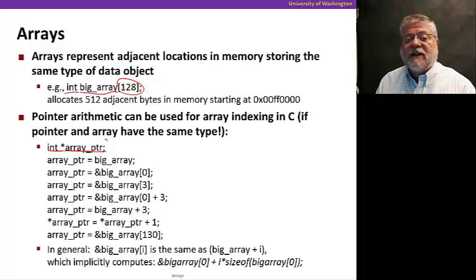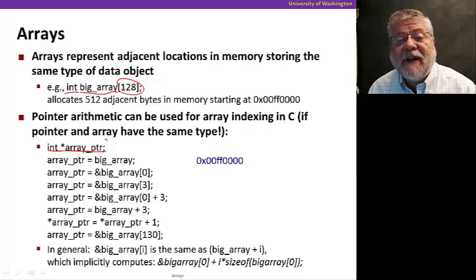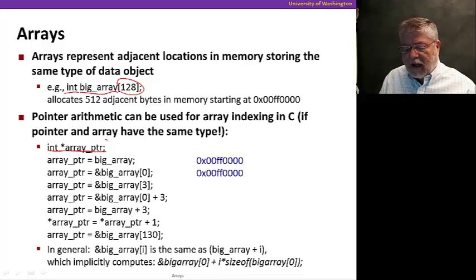The very next statement says, let's take big_array and assign it to array_ptr. Because that's an array, C knows that I don't mean the value big_array because there's 128 different values. What I really mean is the address of the first location of that array. So what's going to be assigned to that pointer is the address of that first location.